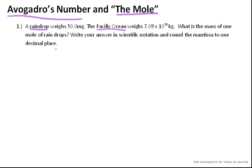So let's look at this problem. A raindrop weighs 50.0 milligrams and the Pacific Ocean weighs 7.08 times 10 to the 20 kilograms. And we need to find the mass of one mole of raindrops. And then we need to write the answer in scientific notation and round the mantissa to one decimal place.